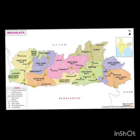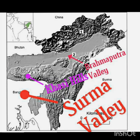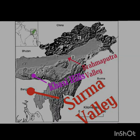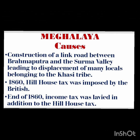In Meghalaya, after the British were granted the Diwani of Bengal, Bihar, and Orissa following the Battle of Buxar in 1764, they wanted to build a link road between the Brahmaputra and the Surma valley. This road was supposed to pass through the Khasi Hills, leading to the displacement of many locals belonging to the Khasi tribe. In 1860, a house tax was imposed by the British, and towards the end of 1860, an income tax was also levied, causing further resentment.